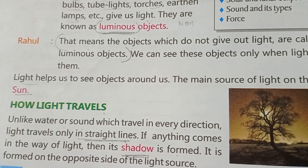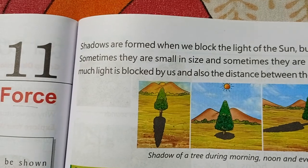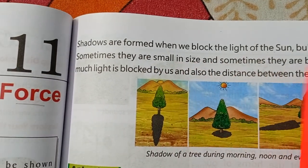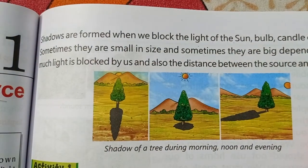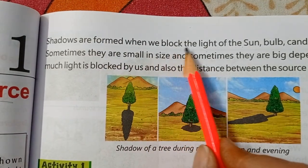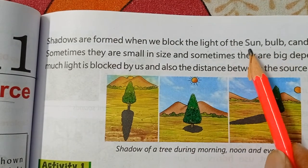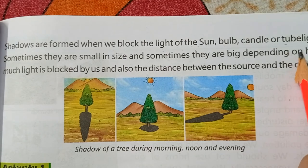So shadows are formed when we block the light of the sun, bulb, candle, or tube light. When we block the light coming from these sources, a shadow (chhaya) is formed. Sometimes shadows are small and sometimes they are big, depending on how much light is blocked.